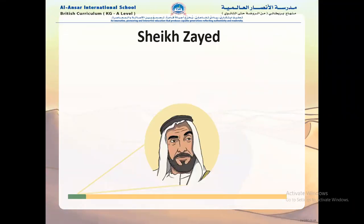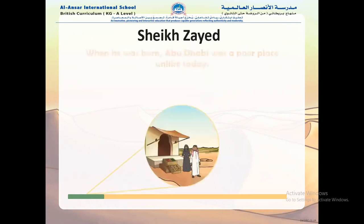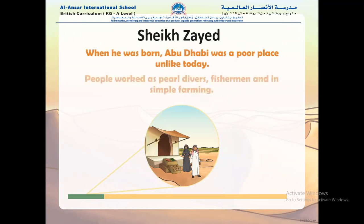The lesson is about Sheikh Zayed. Sheikh Zayed was born on 6th May 1918. His father was His Highness Sheikh Sultan bin Zayed al-Nahyan, who ruled Abu Dhabi. He also had four brothers. When he was born, Abu Dhabi was a poor place unlike today. People worked as pearl divers, fishermen, and in simple farming.